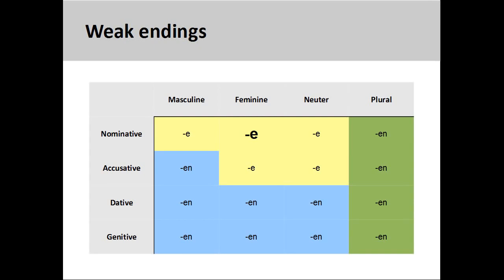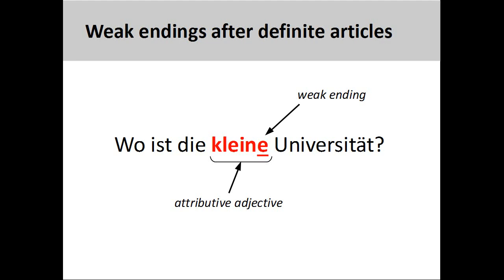You will note on the screen that weak adjective endings are either -e or -en and follow very predictable patterns, which are color-coded here. Although you may at first have to consult your chart every time, repeated practice will increase your competence to the point that choosing the correct ending becomes second nature. The main thing is to be patient with yourself and not give up. Once we have determined the correct weak adjective ending, we simply add it to each and every attributive adjective coming after the definite article and preceding the noun: 'Wo ist die kleine Universität?' — Where is the small university?